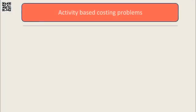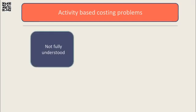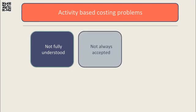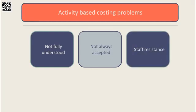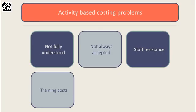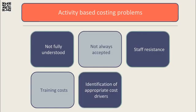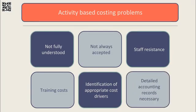Despite its perceived superiority, problems can arise when implementing an activity-based costing system. It is a more complex system that may not be fully understood by many managers and therefore not fully accepted as a means of cost control. Staff may be resistant to such change, and training would represent a cost to the company. Difficulty can also arise in identifying appropriate cost drivers, as it is not always easy to identify a single cost driver specific to a particular overhead — this can be an arbitrary process. Finally, activity-based costing relies on detailed accounting records, and compiling such records can be time-consuming and costly.